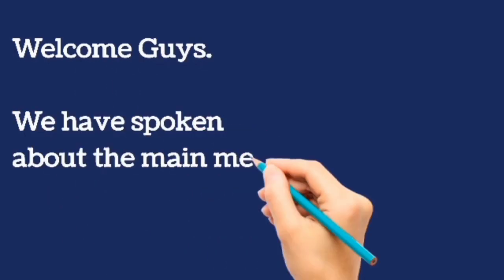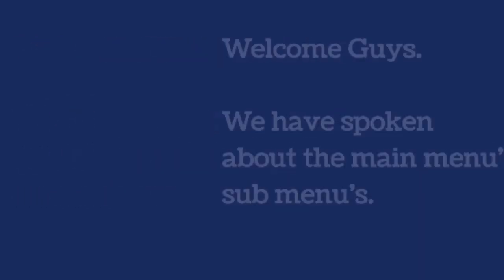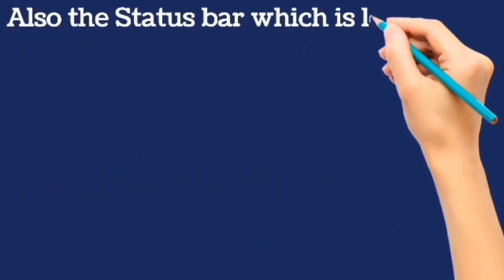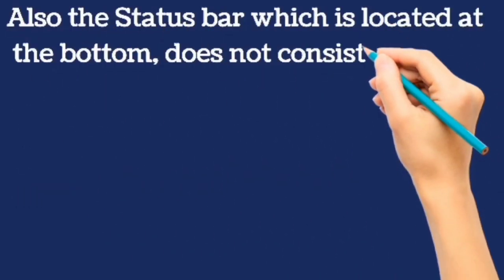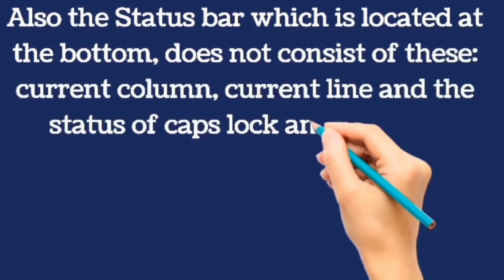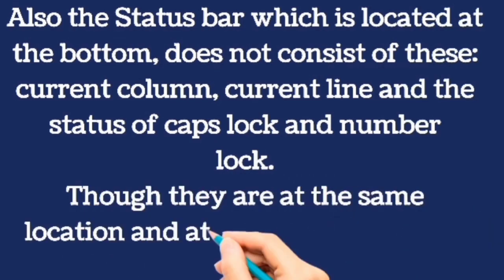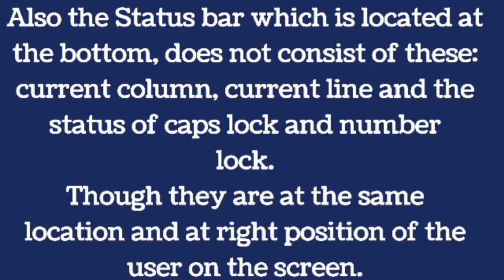QBasic Programming Tutorial 3. Welcome guys, we have spoken about the main menus and their sub menus. Also, the status bar which is located at the bottom does not consist of these: current column, current line, and the status of caps lock and num lock. Though they are at the same location and at the right position of the user on the screen. So the status bar is at the left side at the bottom of the user on the screen.